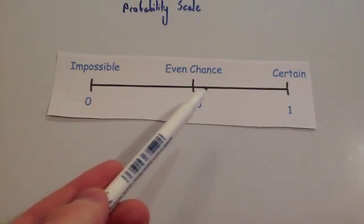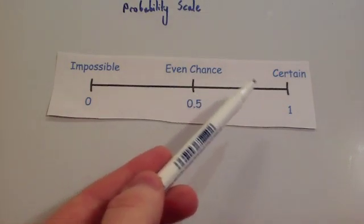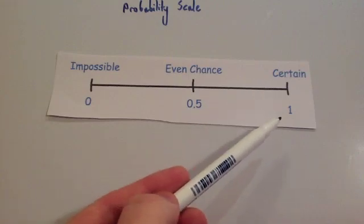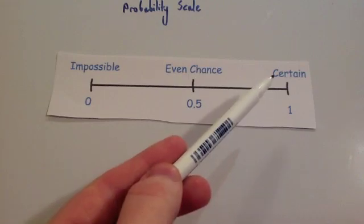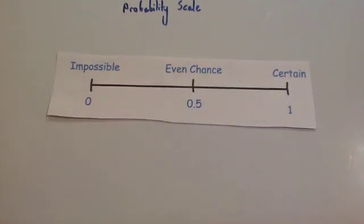Anything past even chance, so above 0.5, would be likely to happen. Something with a probability of 1 is certain — it's definitely going to happen. So let's consider where some events would be on the probability scale.